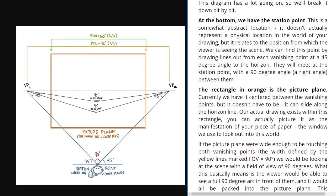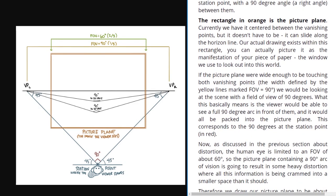So at the bottom, we have the station point. This is actually a somewhat abstract location. It doesn't actually represent a physical location in the world of your drawing. But it relates to the position from which the viewer is seeing the scene. We can find this point by drawing lines out from each vanishing point at a 45 degree angle to the horizon. They will meet at the station point with a 90 degree angle, a right angle, between them.